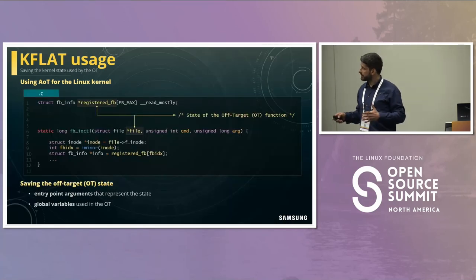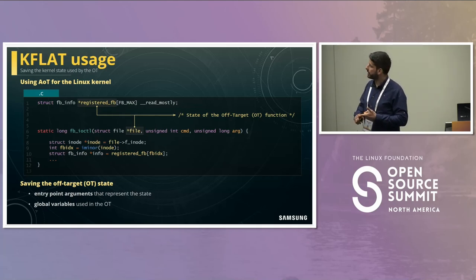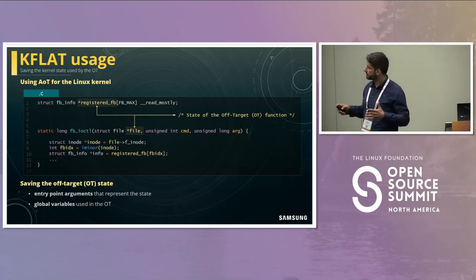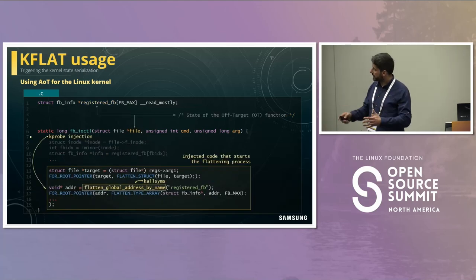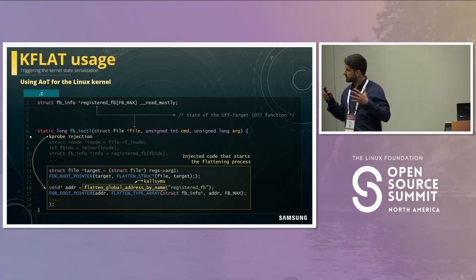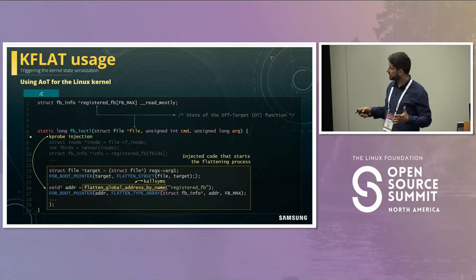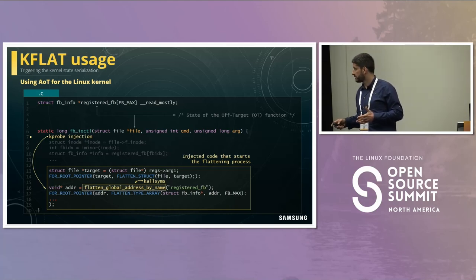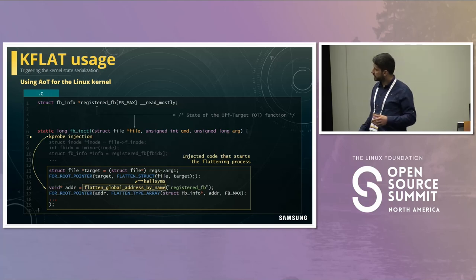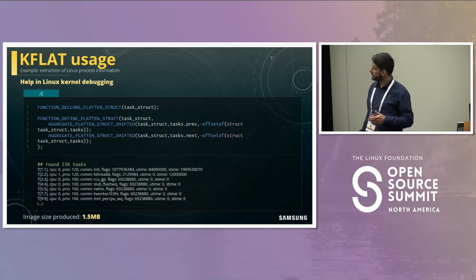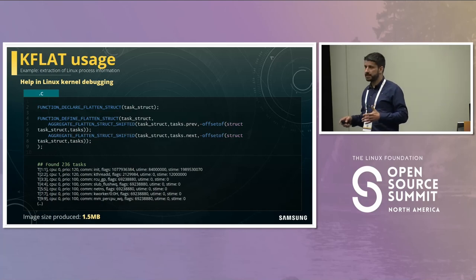Another idea: when the kernel runs the IOCTL function, we use the KFLAT tool to save the entire kernel state used by that IOCTL and dump it to a file, then restore it in the off-target. You can imagine this as transferring execution from the target device to the host development machine — or multiple instances of it — at the point of the IOCTL function. The kernel state used in this IOCTL includes function arguments like struct file, which represents a lot of kernel state, and the global variables used in the IOCTL code. We insert the KFLAT injection at the entry of the IOCTL function and execute the KFLAT recipes; global variable addresses can be found via the kernel symbol table.